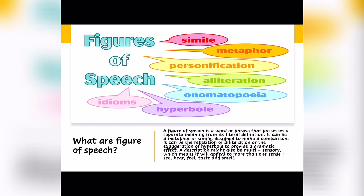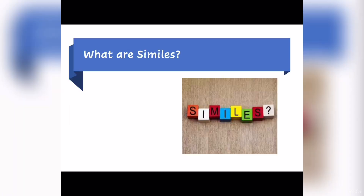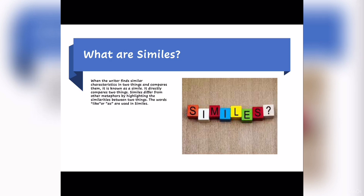Now let's move on to some types of figures of speech. Number 1: what are similes? When the writer finds similar characteristics in two things and compares them, it is known as a simile. It directly compares two things. Similes differ from other metaphors by highlighting the similarities between two things. The words 'like' or 'as' are used in similes.